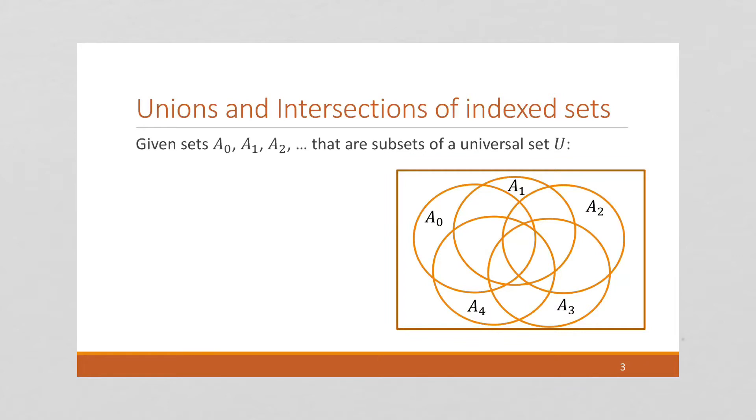Similarly, we can talk about the intersection from i equals 0 to n of A_i. And this is going to be A_0 intersect A_1, intersect A_2, intersect all the way up to A_n.